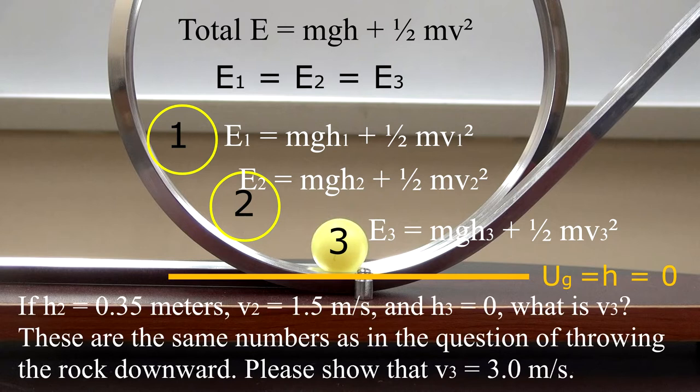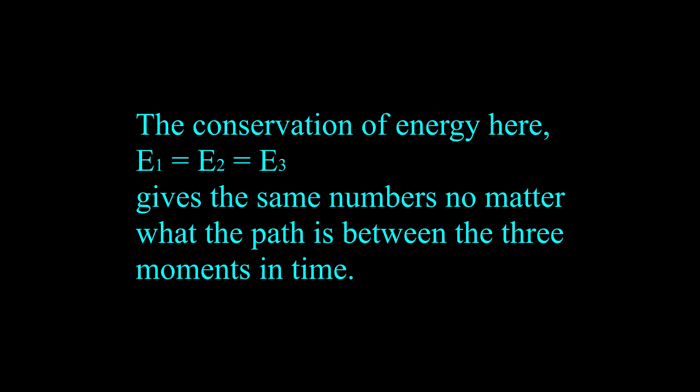If H2 equals 0.35 meters, V2 equals 1.5 meters per second, and H3 equals 0, what is V3? These are the same numbers as in the question of throwing the rock downward. Please show that V3 equals 3.0 meters per second. The conservation of energy E1 equals E2 equals E3 gives the same numbers no matter what the path is between the three moments in time.